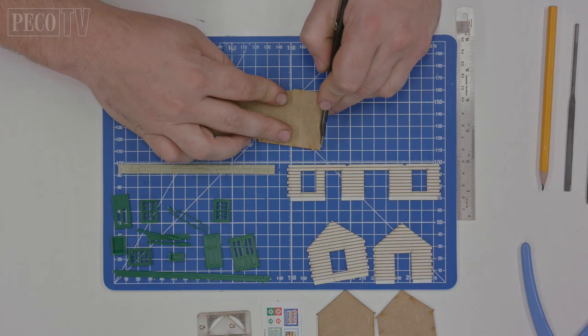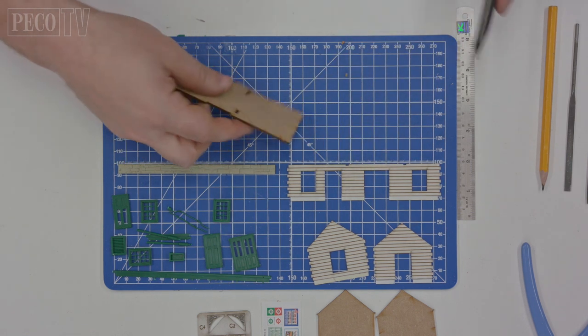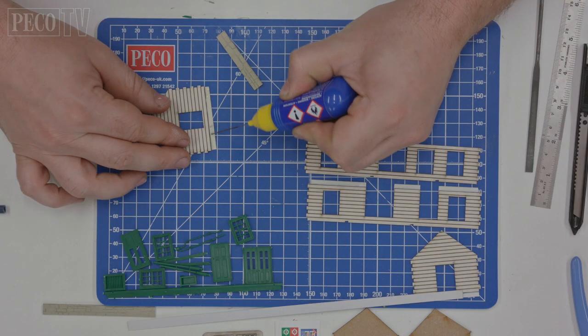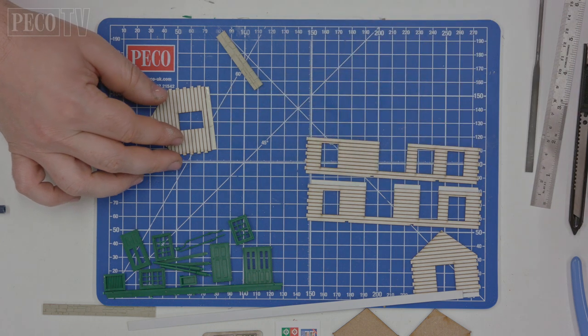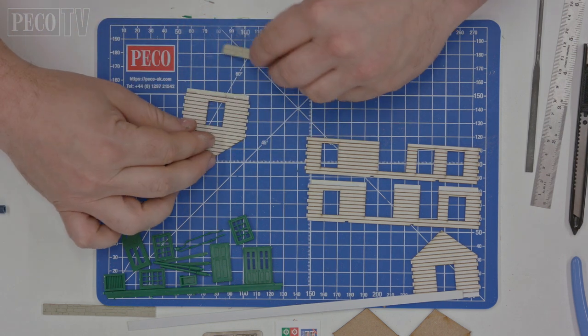Now from the MDF base of your building remove all of the supporting wall pegs leaving a flush edge. Now attach the wills plastic stone strip to the bottom of the window end wall of the station building using the microstrip or cardboard as a joint strengthener as shown here.